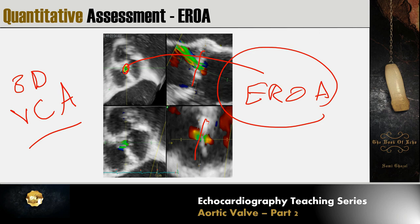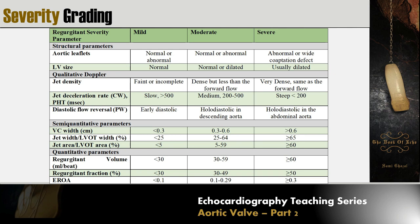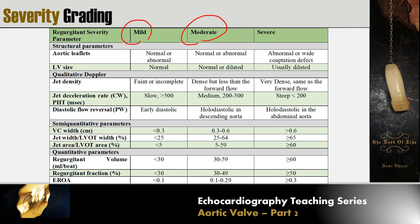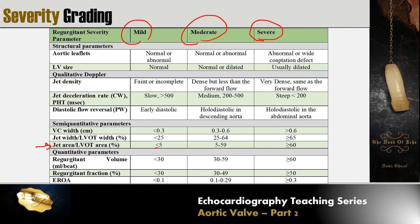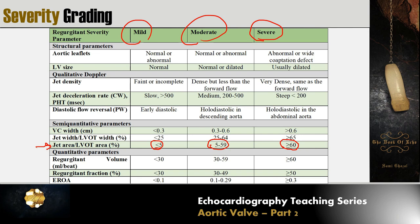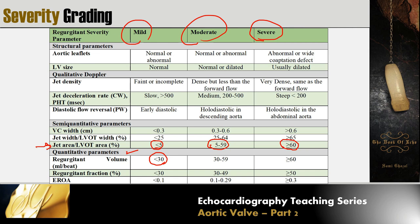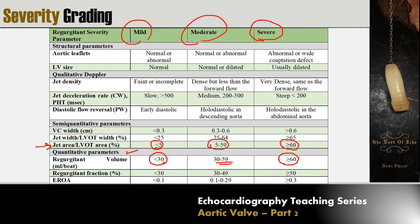From the guidelines reference table: for jet area, less than 5% is mild, 5–59% is moderate, and 60% or more is severe. For regurgitant volume, less than 30 ml is mild, 30–59 ml is moderate, and 60 ml or more is severe. Regurgitant fraction and effective regurgitant orifice area follow similar graded thresholds.